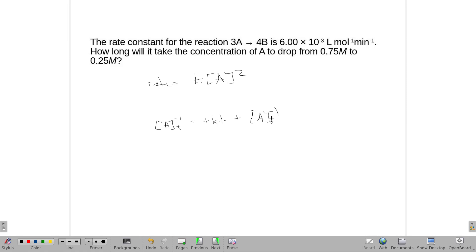Alright, we're going to plug things in and solve for time here. So our A at any time is the time we go to, so the 0.25. The K is given as 6.00 times 10 to the negative third liters per mole per minute. We're going to solve for time and this is 0.75 molar to the negative first.